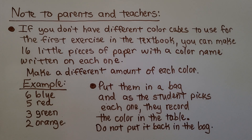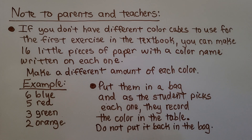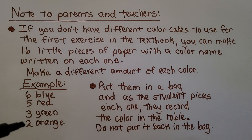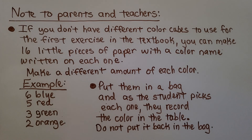A quick note to parents and teachers: if you don't have different color cubes for the first exercise called Listen and Draw, you can make 16 little pieces of paper with a color name on each one — for example, six blue, five red, three green, two orange. Put them in a bag, and as the student picks each one, they record the color in the table without putting it back.